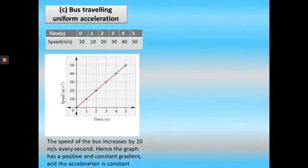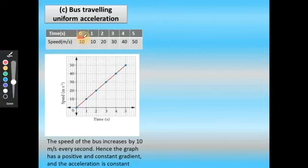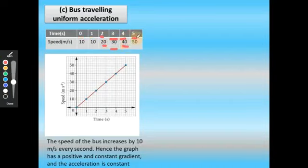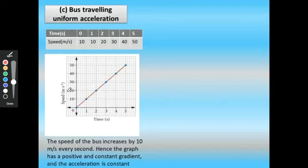For a bus traveling with uniform acceleration: at 0 seconds speed is 10 m/s, at 1 second 10 m/s, at 2 seconds 20 m/s, at 3 seconds 30 m/s, at 4 seconds 40 m/s, and at 5 seconds 50 m/s. The speed increases by 10 meter per second every second. The graph has a positive and constant gradient, and the acceleration is constant.